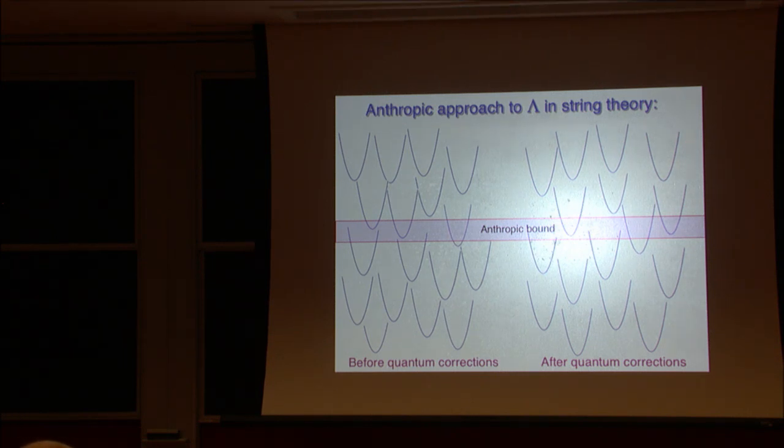And then if you calculate quantum corrections to them, it will be all reshuffled. So the problem is how it will be with quantum corrections, how they affect your results, what will be if the results are unreliable, they will move like that. But hopefully in this small range we will have still enough vacua which will explain why the cosmological constant is as small as it is now.